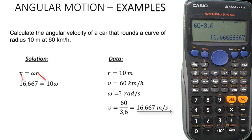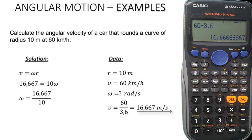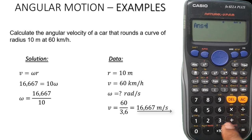This will make our substitution much easier. We substitute both our values so that we can get the answer for angular velocity. We always divide by the number closest to our unknown — in our case this is 10. So we take the 10 to the other side and it divides 16.667, giving us our final answer.